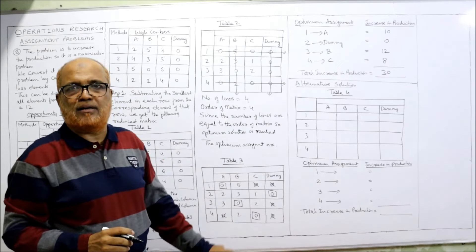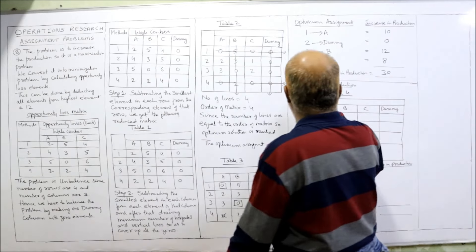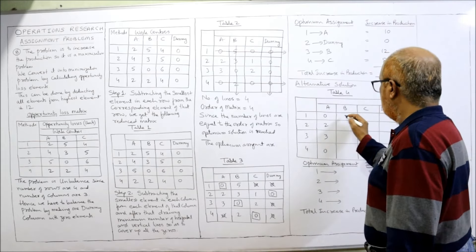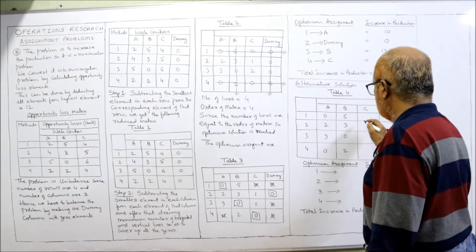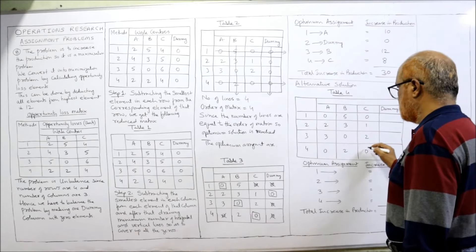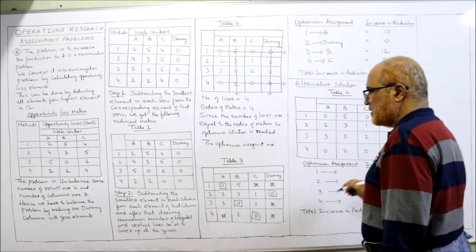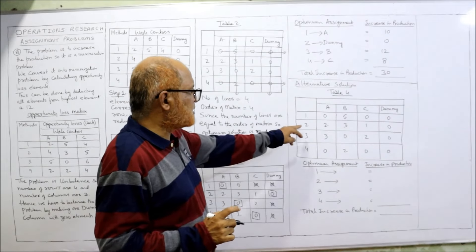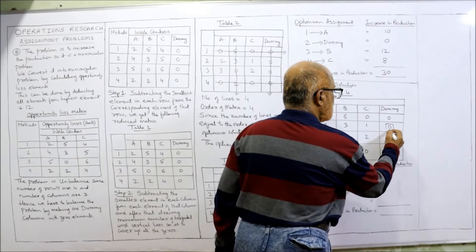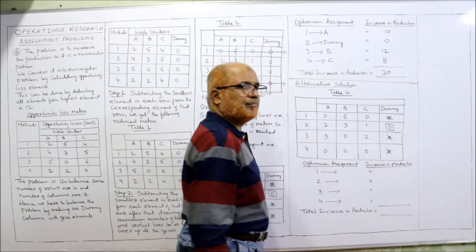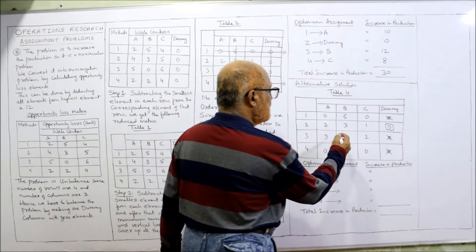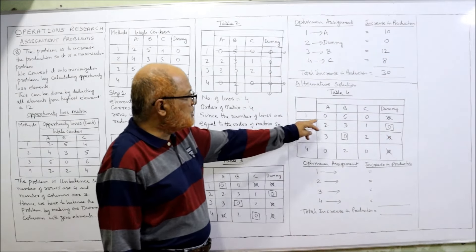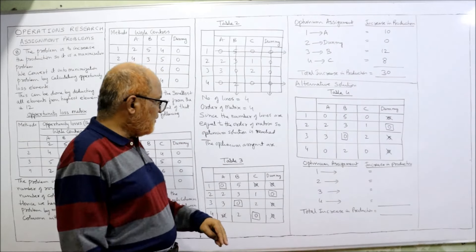Now we find the alternative solution, because we made an arbitrary assignment once. We reverse that assignment. Taking the same matrix values — row 1: 0, 2, 3, 0; row 2: 5, 3, 0, 2; row 3: 0, 1, 2, 0; row 4: all zeros — we again check for rows with a single zero. The second row has one zero — assign it and cancel the zeros in that column. The third row has one zero — assign it and cancel. Now we have two zeros in the first row and two zeros in the last row.